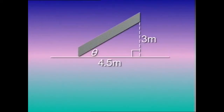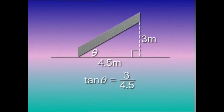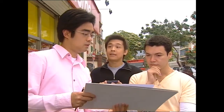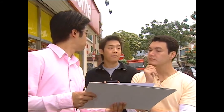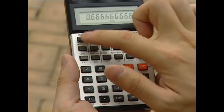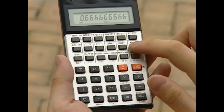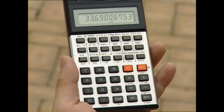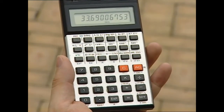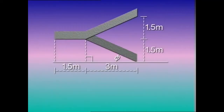In the first diagram, to obtain the angle of inclination we'll use the ratio of the opposite side to the adjacent side — that is, the tangent ratio. So tangent theta equals 3 over 4.5. Using the calculator: 3 divided by 4.5, then inverse tangent, gives an angle of inclination of approximately 33.69 degrees.